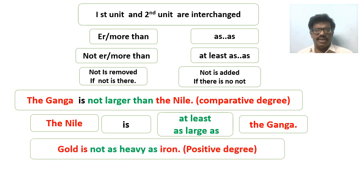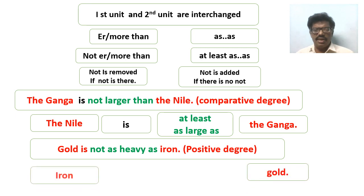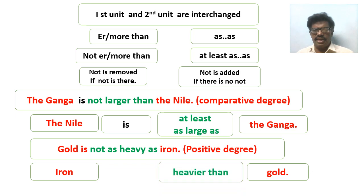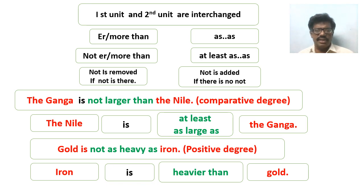Another example: 'Gold is not as heavy as iron' — this is in positive degree, we have to change it into comparative degree. As per the rule, interchange the units: gold is brought here, iron is brought here. In the question there is 'as...as', so we write 'than' — we have written 'heavier than'. In the question there is 'not', so we remove 'not'. The answer is: 'Iron is heavier than gold'.